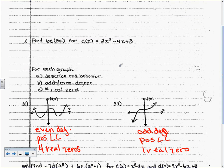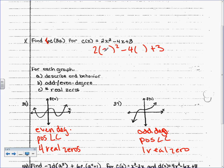Let's do X next. Find 6 times C of 3A, for C of X equals 2x squared minus 4x plus 3. That says — ignore the 6 for a second — instead of an x, C is saying go to your C function. So instead of x, they want me to put in 3A. It's saying C function — instead of an x, you're going to put 3As in. So 2x squared minus 4x plus 3, and I replace those with 3A. But there was a 6 in front, so when we're done we'll multiply everything by 6.